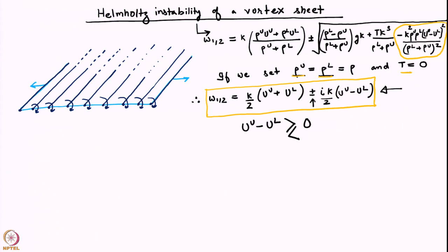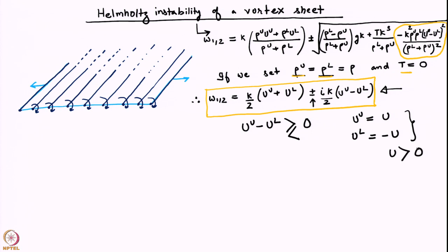Let us understand this instability a little more. Since we are dealing with a single fluid, there is no interface as such. So what does it mean to have a difference in velocities between the two streams? For that it is useful to consider the special case where u_u equals U and u_l equals minus U, with U greater than zero.